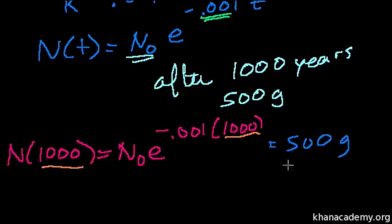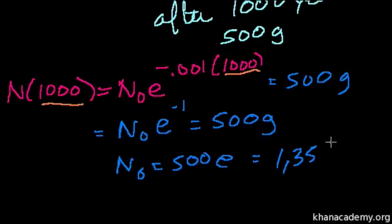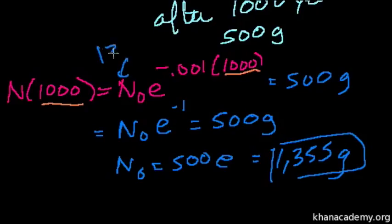So I solve for N₀. We have 0.001 times 1,000, so N₀ times e to the minus 1 equals 500 grams. Multiply both sides by e: N₀ equals 500e, which is about 2.71, so 500 times 2.71 equals 1,355 grams, or 1.355 kilograms. That's what I started with.